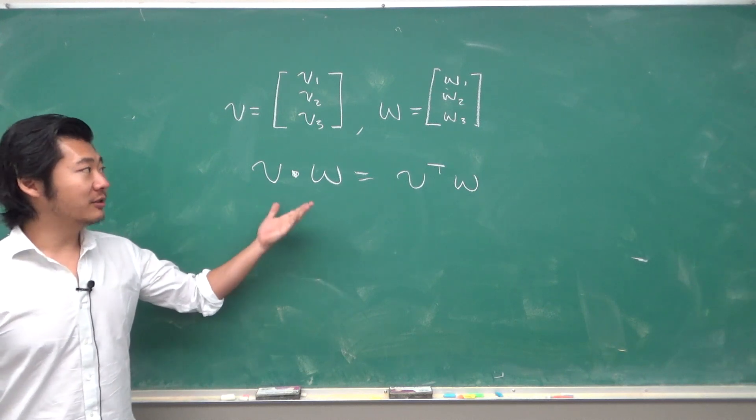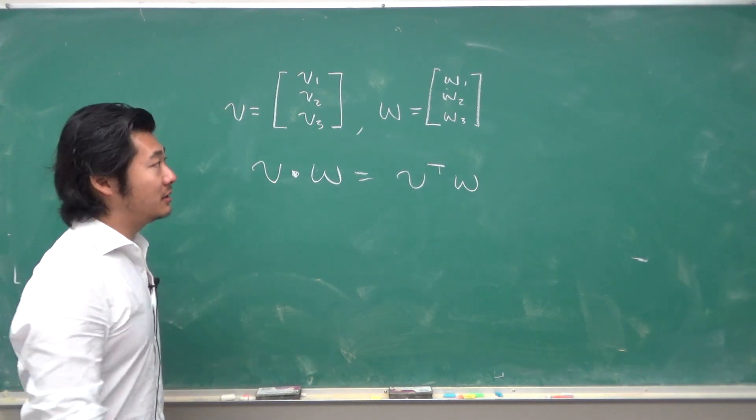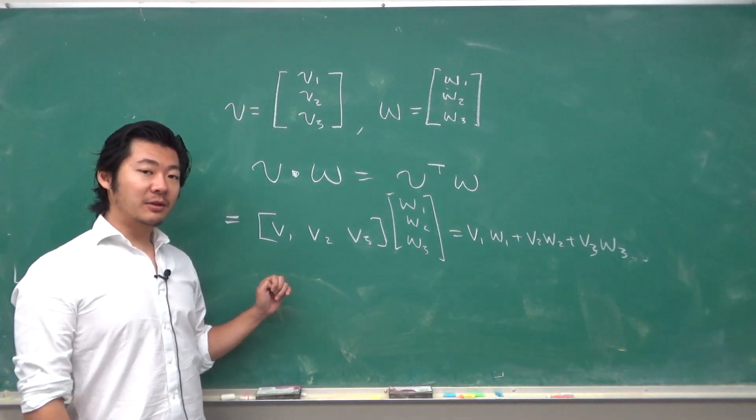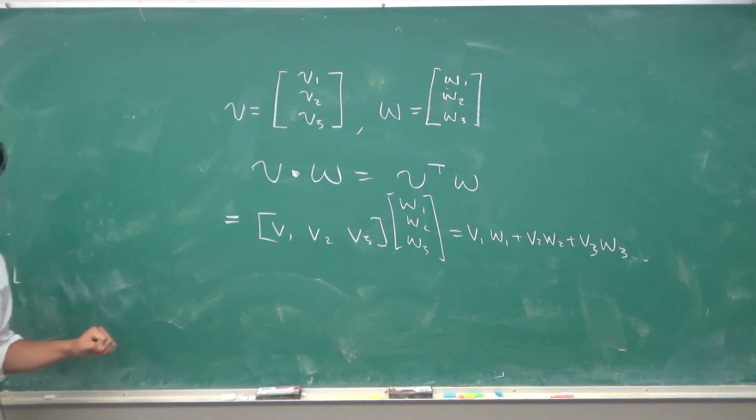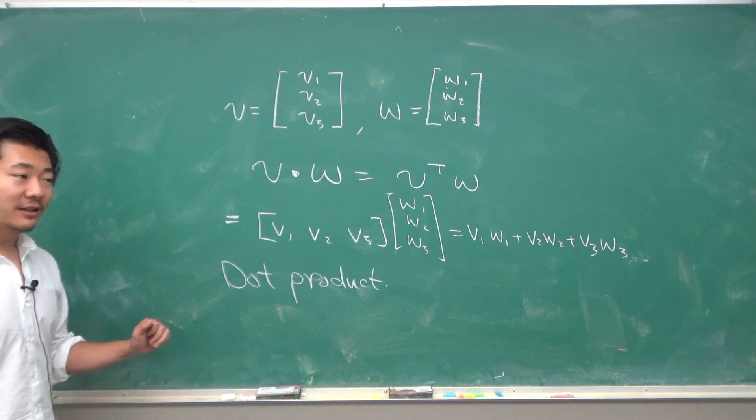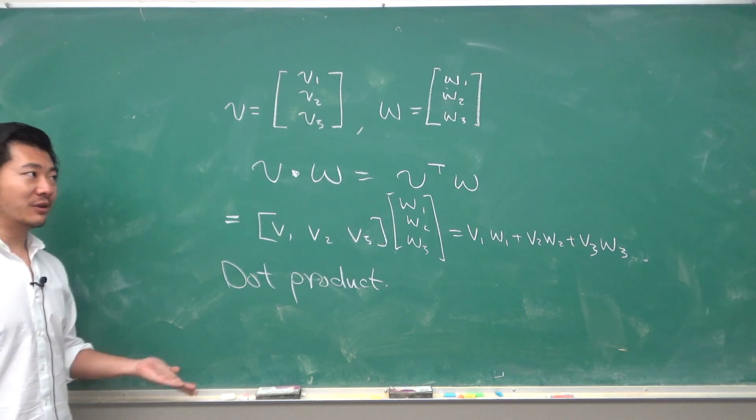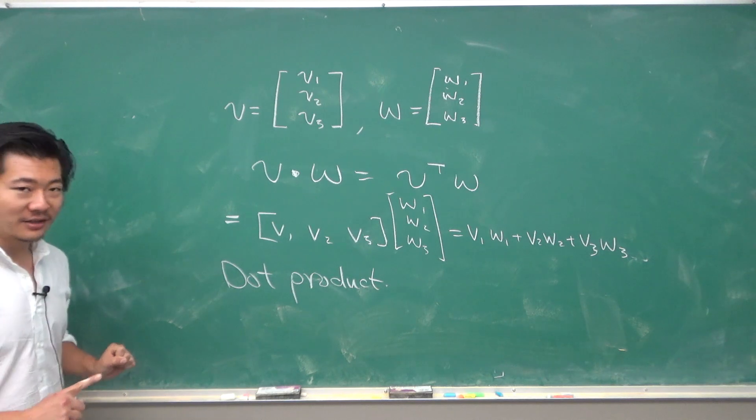Now, the V and the W have to be column vectors of the same size. So when you do this, you get V1 times W1 plus V2 times W2 plus V3 times W3. Another name for the inner product is the dot product. Technically, an inner product is a little bit more general, but in this class, the inner product and the dot product are the same exact thing.